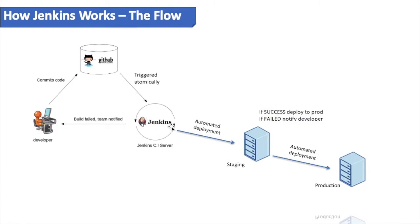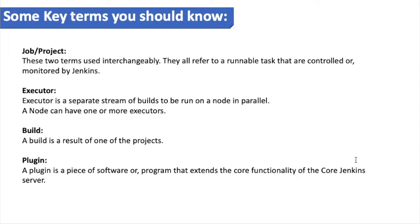Once the build is successful, the binary or exe file will be deployed or delivered to the staging environment for further testing — this process is called continuous delivery. It can then be deployed into production once the code is successfully tested, verified, and approved by management. This is the Jenkins workflow.